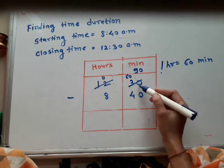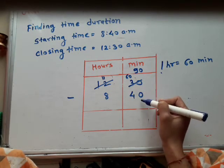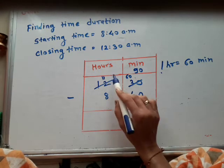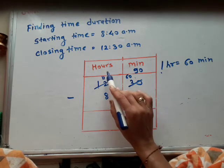30 minutes minus 40 is not possible, so we borrow from the hours column.